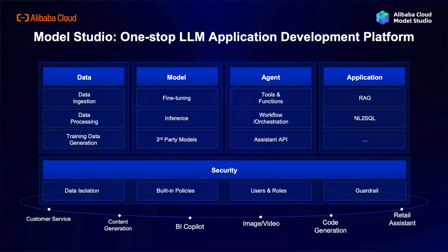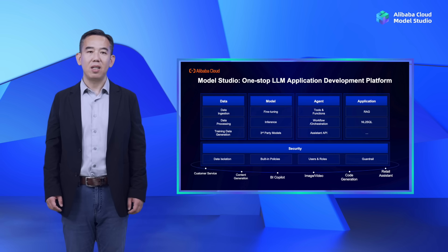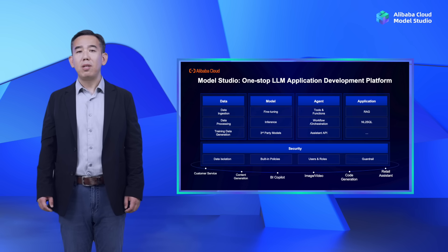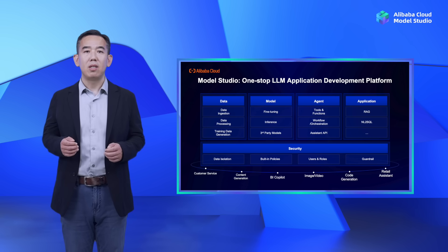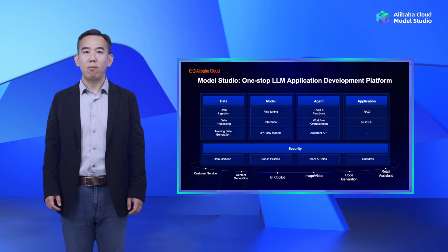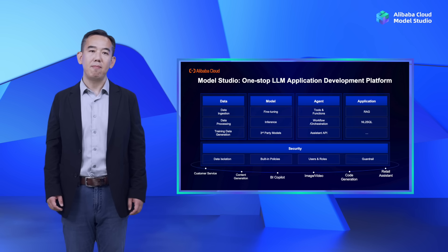The Assistant API further enhances usability by integrating AI assistants into various applications. With all these functionalities, Model Studio makes a wide range of LLM use cases possible — from customer service, retail assistance, and content generation to code generation. Model Studio makes it easy to incorporate AI into daily operations, improving efficiency and decision-making processes. Lastly, we understand the significance of safeguarding sensitive information. Model Studio incorporates data isolation techniques ensuring confidentiality and integrity, with built-in policies and user role management to minimize risks while allowing collaboration. Guardrail protects users from inappropriate responses and hallucinations from LLMs.